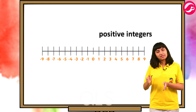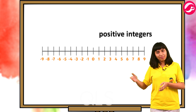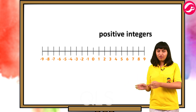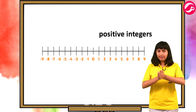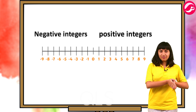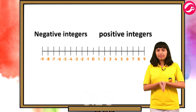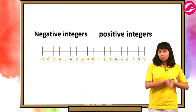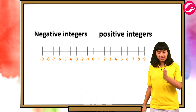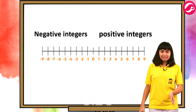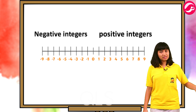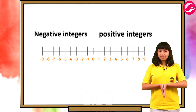Zero ke right mein jitne points honge unhe one, two, three, four, five likhna hai. And points to the left of zero are negative numbers like minus one, minus two, minus three, minus four, minus five. Zero ke is side se minus one, minus two, minus three, minus four, minus five start karna hai.